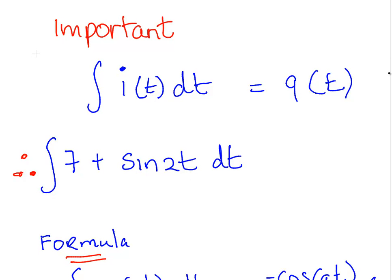The integral of i(t) dt is how we find the charge. So the integral of the current gives us the charge. So what we have to do is integrate our expression for the current to find the charge. So 7 plus 4 sin 2t, what we have to do is integrate that with respect to t.